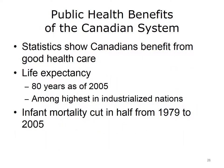Despite its drawbacks, the Canada Health Act has contributed to public health achievements in Canada. Life expectancy and infant mortality are two measures often used to compare the effectiveness of health care in different countries. Life expectancy at birth was more than 80 years in 2005, among the highest life expectancy in the group of seven countries, which are France, Italy, Germany, Japan, the U.S., the United Kingdom, and Canada. Canadian infant mortality was cut in half from 1979 to 2005.